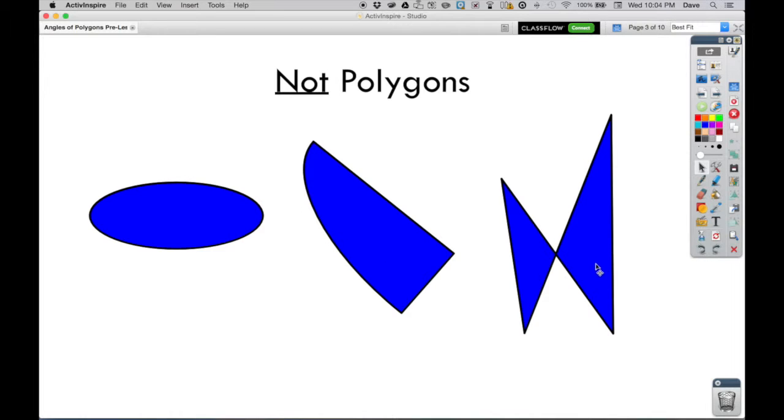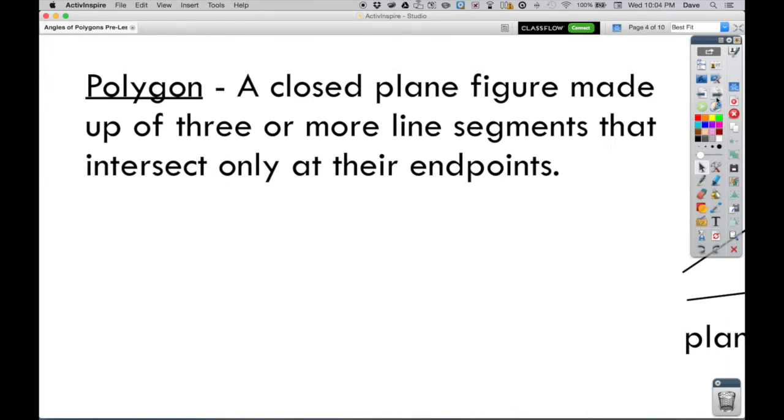So what we also need to understand is what is not considered a polygon. These three examples are not polygons. This one isn't a polygon because the sides aren't straight—it's a curved oval. Same with this one. Even though these two sides are straight sides, this curved side makes it not a polygon. This one, even though it has all straight sides, isn't a polygon because the sides don't meet at the vertices. There's a spot here where these two sides meet in the middle.